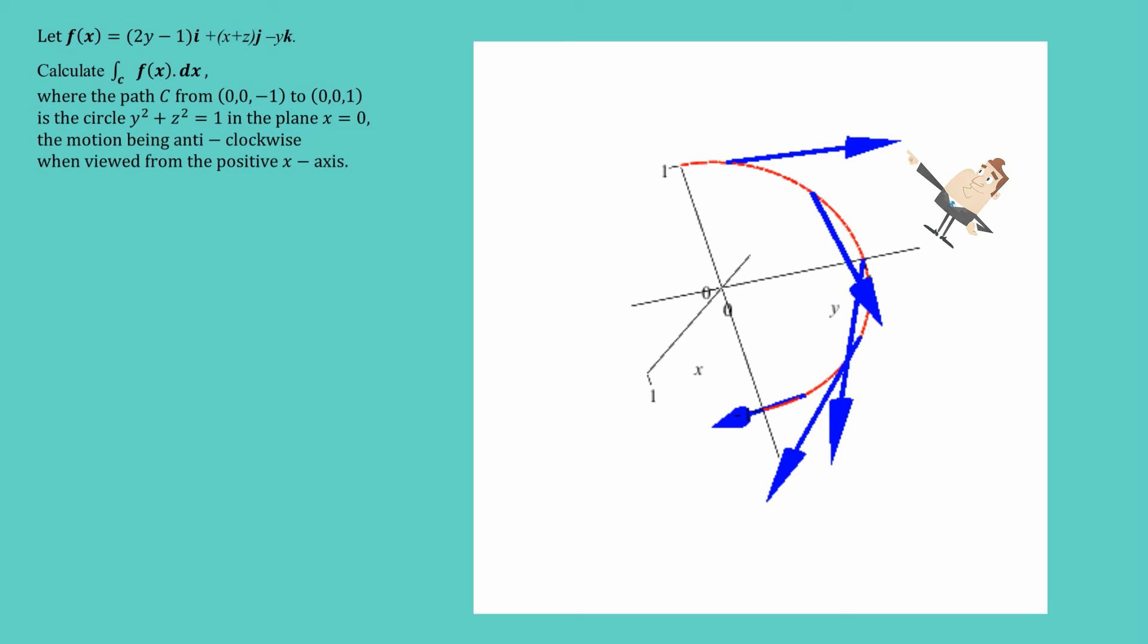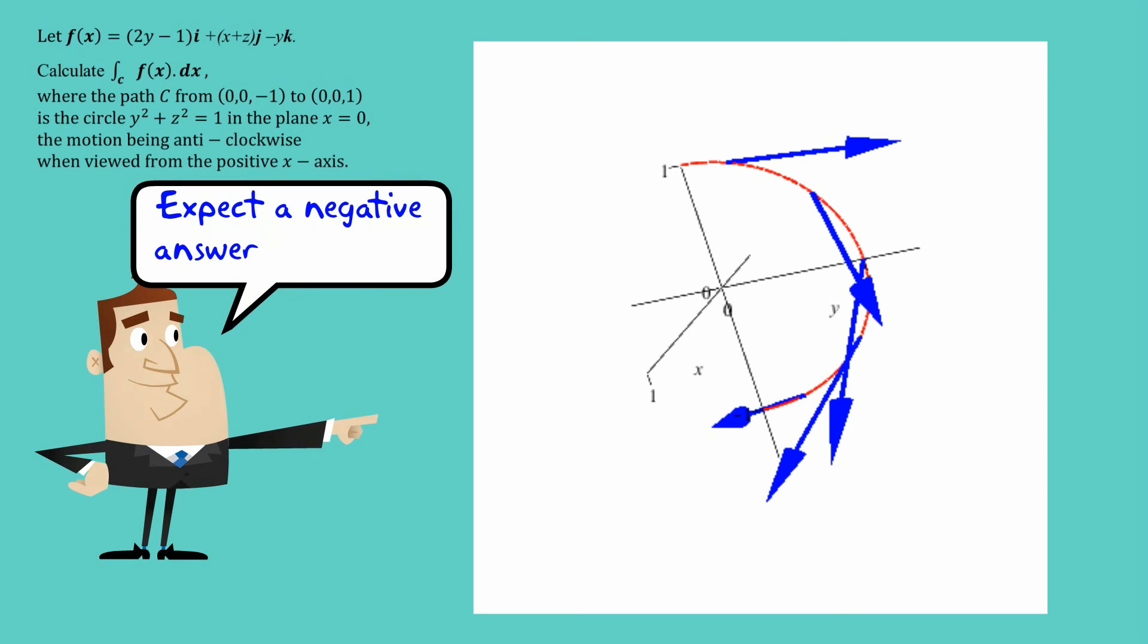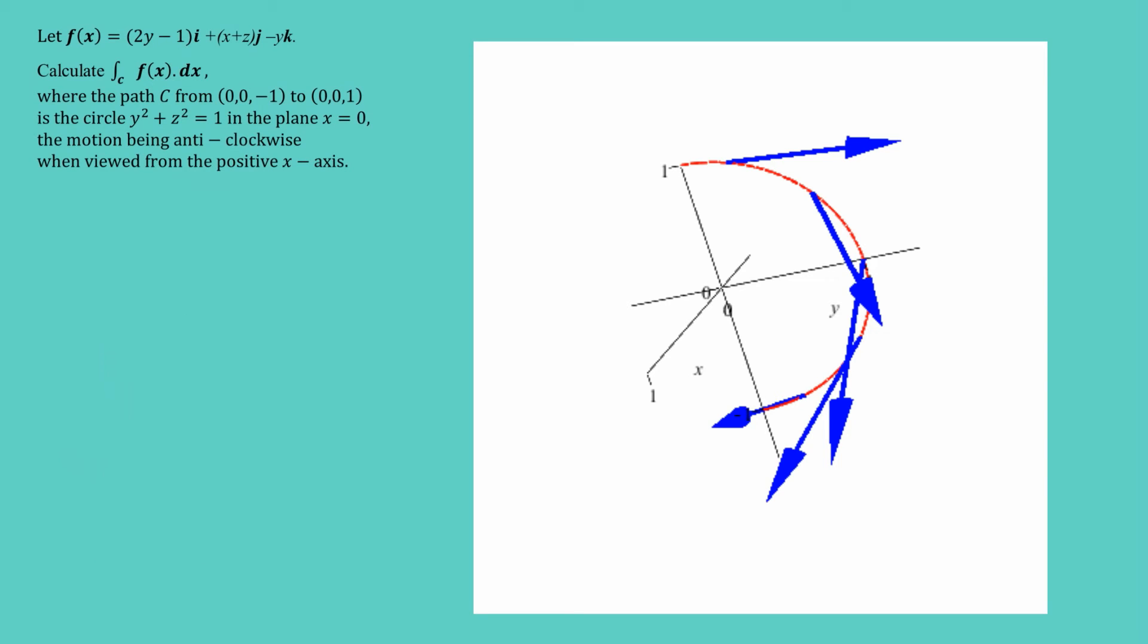Now, you can see from what I've got on the screen that generally the force is against the direction of the path C. And in that case, we say that negative work is being done. And so we would expect that the answer eventually is going to be negative because most of these vectors you can see are sort of going in a direction roughly opposite to the direction of the path C.